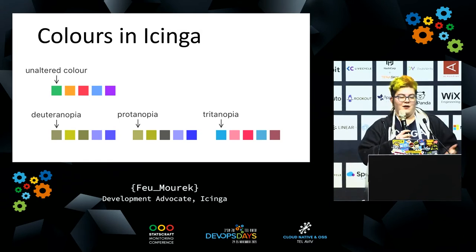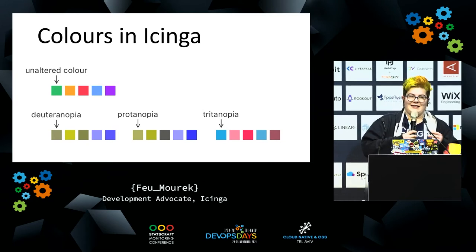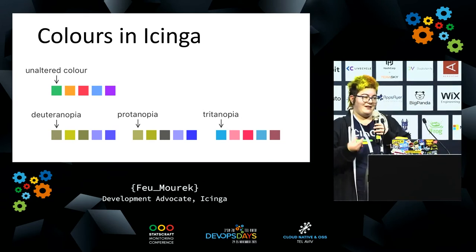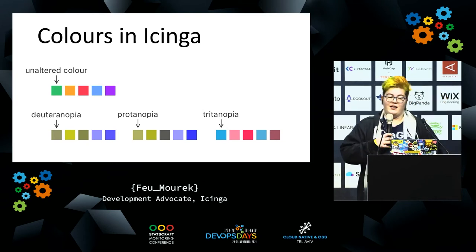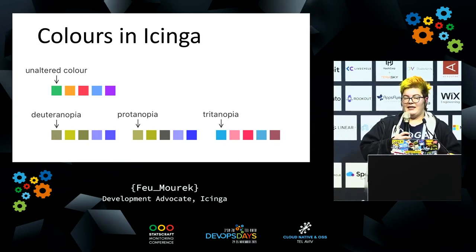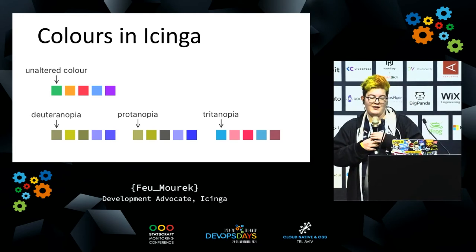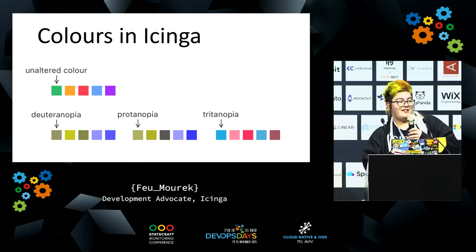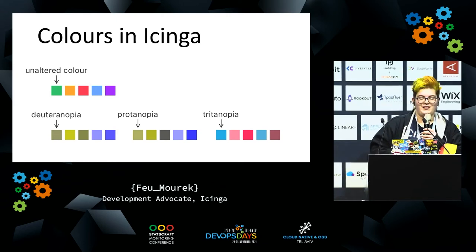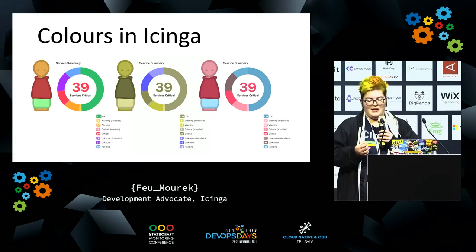In Icinga, a monitoring tool, as you can imagine, the primary colors used are red, orange, and green — or red, yellow, and green — which are a little difficult to distinguish if you have any form of red-green blindness. The squares in the top row here are the unaltered, default colors. And below, you can see how those colors look to people affected by one of the forms of color blindness. As you can tell, it's kind of difficult to differentiate between red and green, which are the important ones to differentiate.